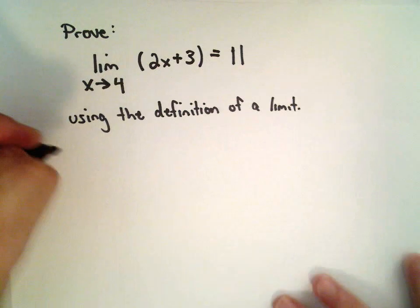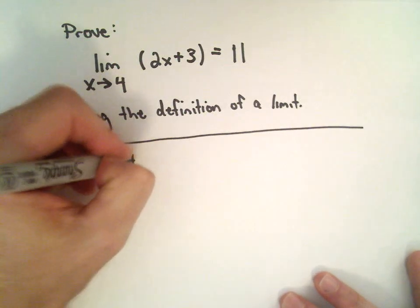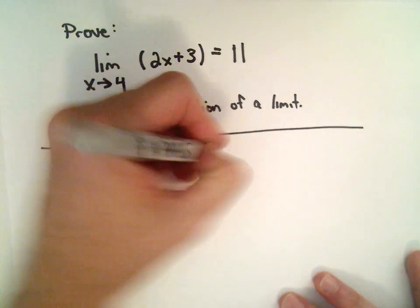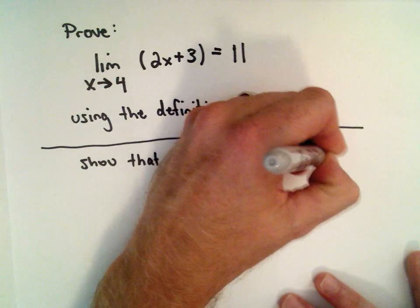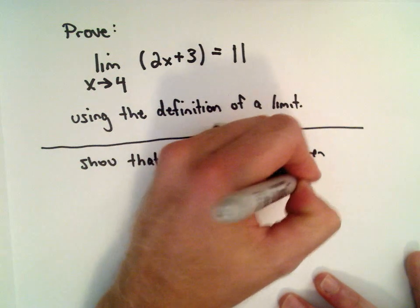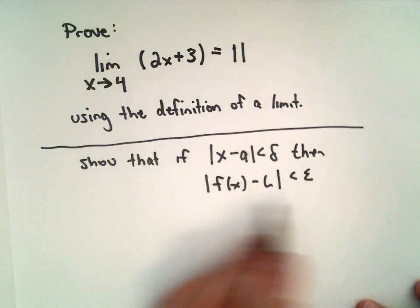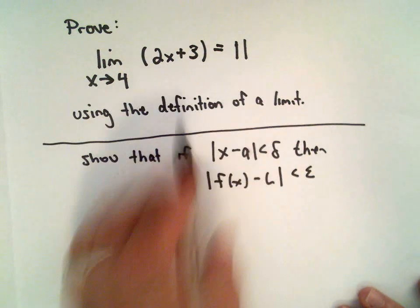So again, we said that by definition we have to show that if the absolute value of x minus a is less than delta, then we have that f of x minus L will be less than epsilon. If we can justify this statement, then we will have proven this limit.